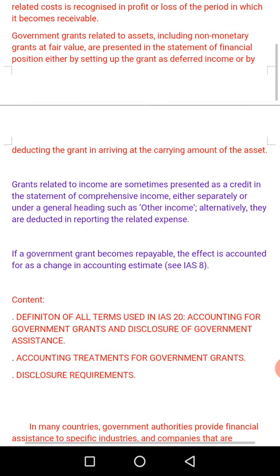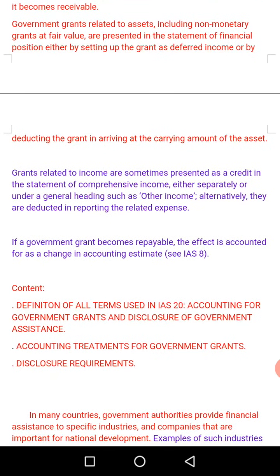If a government grant becomes repayable, the effect is accounted for as a change in accounting estimate. We already noted that grants are not repayable unlike loans. So once a grant becomes repayable it is no longer a grant. Rather than treating it under IAS 20, we should use IAS 8, once it has already been previously recorded as IAS 20.